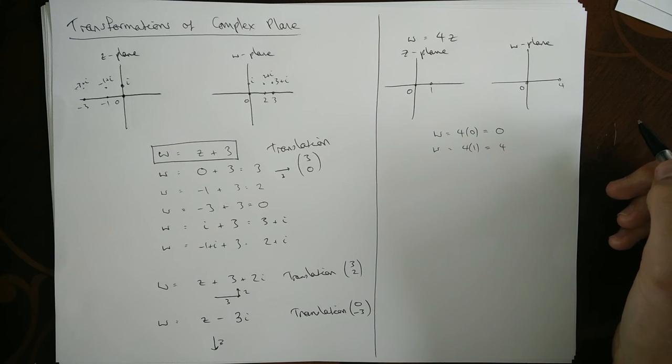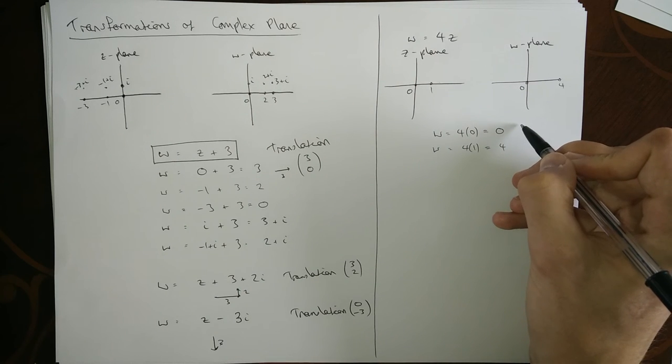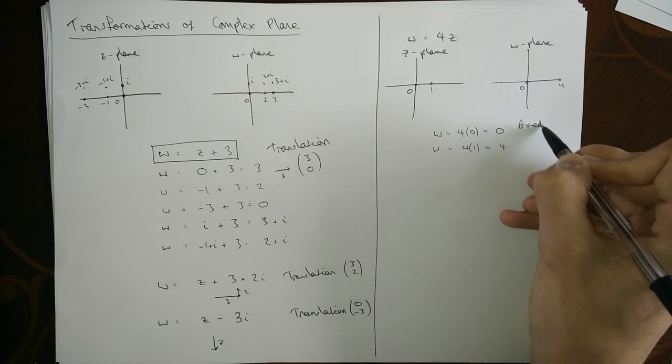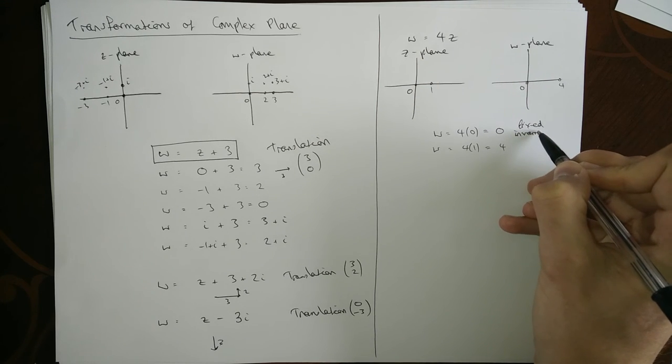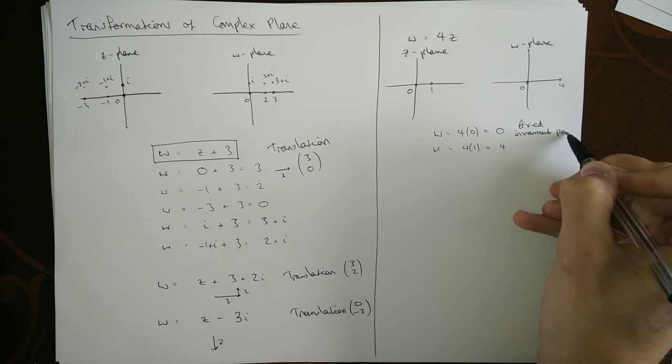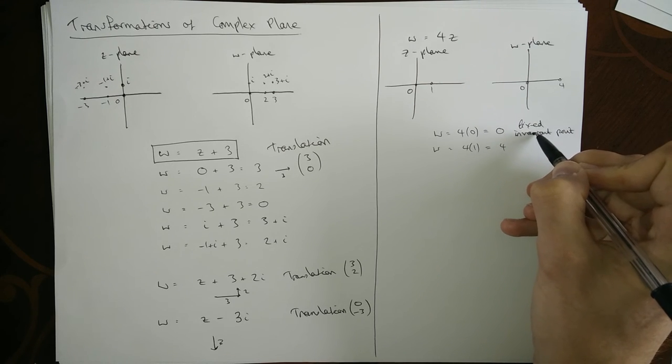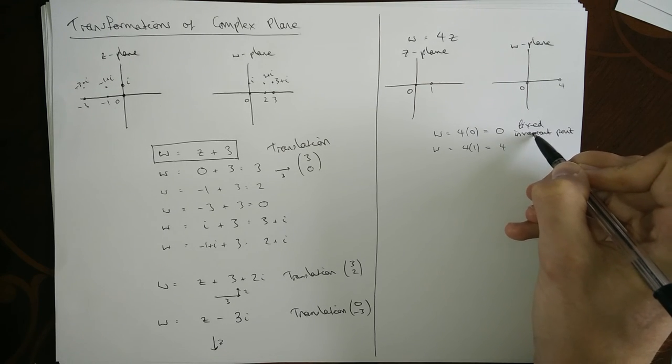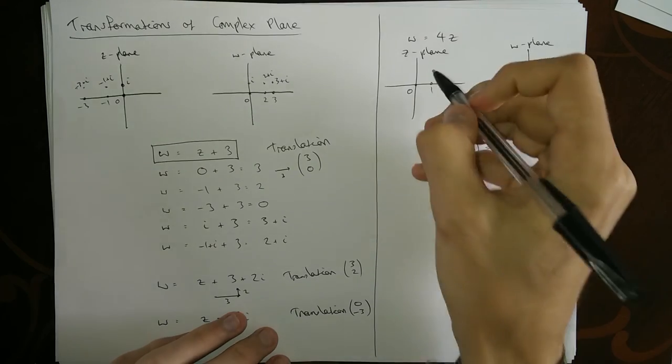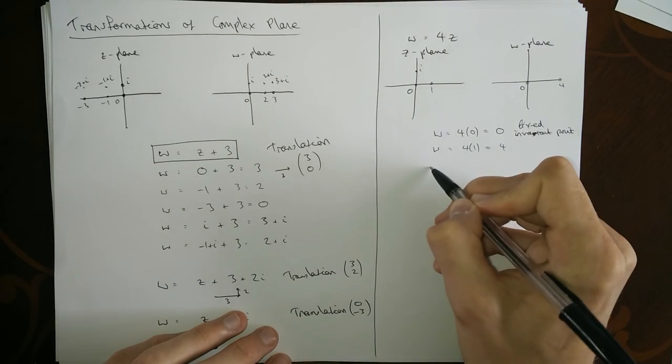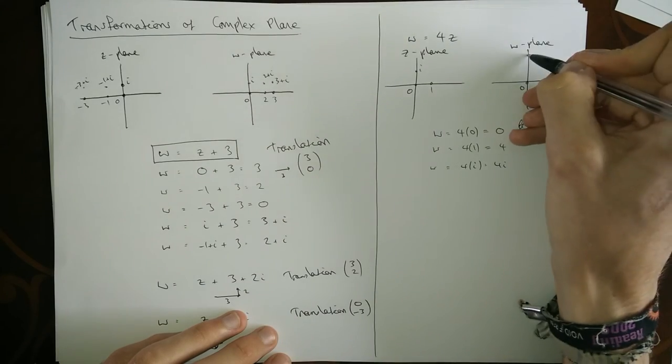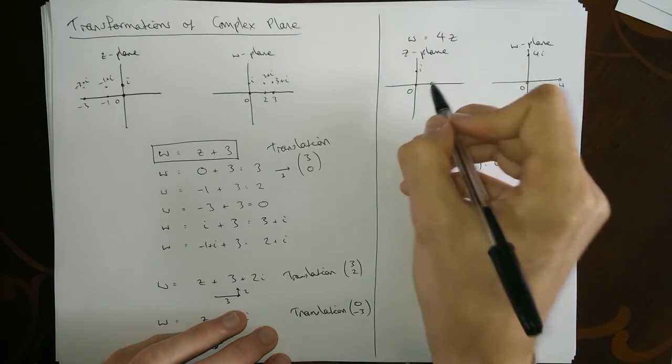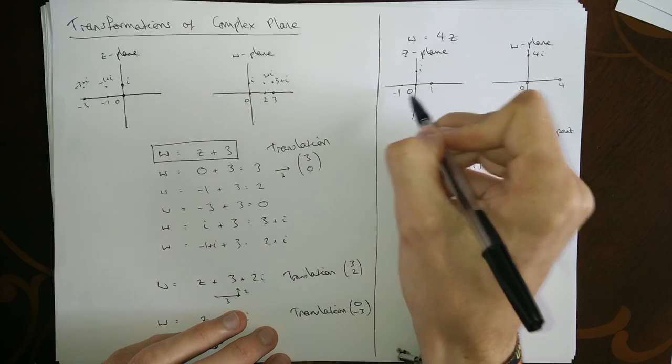There's a special name for that - this is called a fixed point, or even more special name, it's called an invariant point. Other points: i would get mapped to somewhere else, four times i would be four i. You see what's happening - it's an enlargement, it's expanding about the origin.